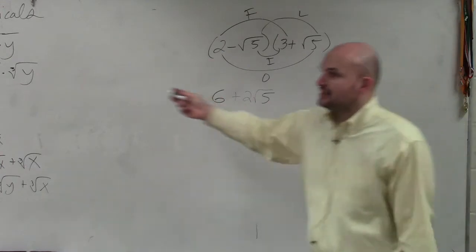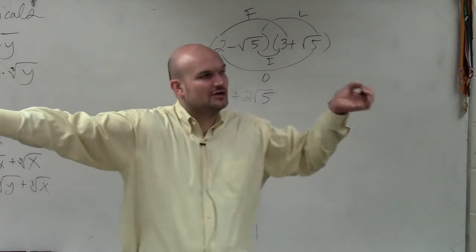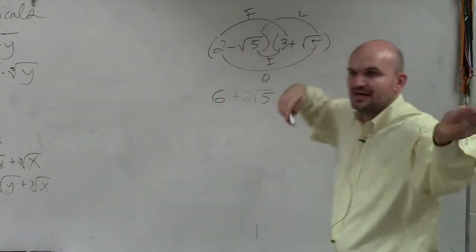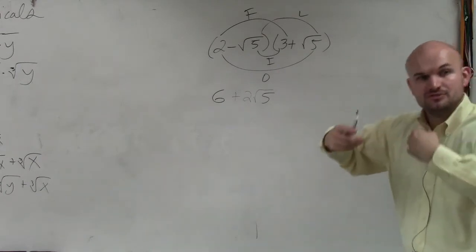We can only multiply them when they're both under the same root. So if you have a number that's not under a root, you're just going to multiply it in front. It's kind of like 2 times x is 2x. 2 times the square root of 5 is just 2 square root of 5.